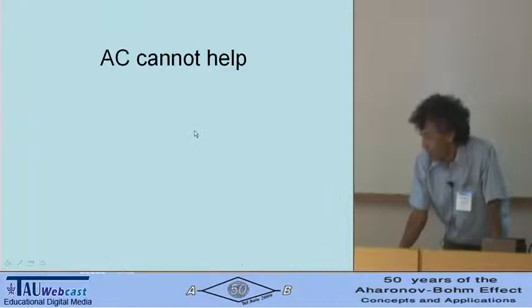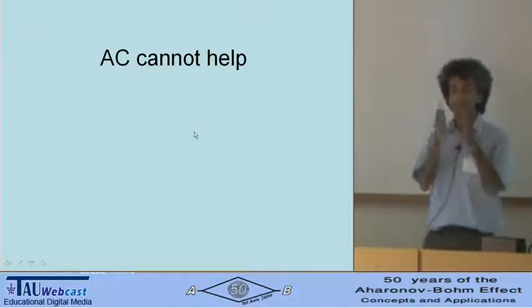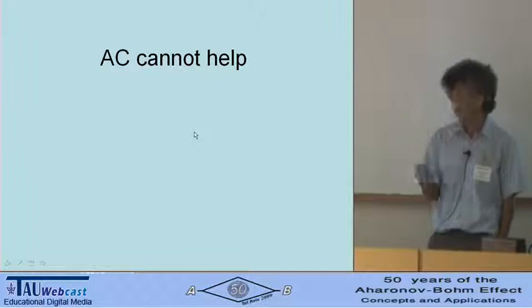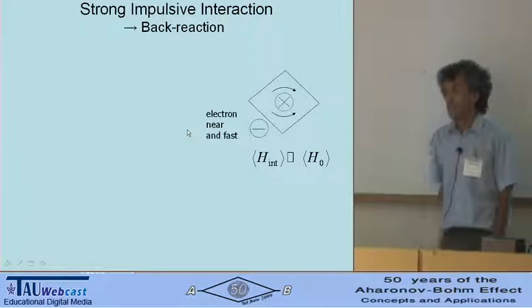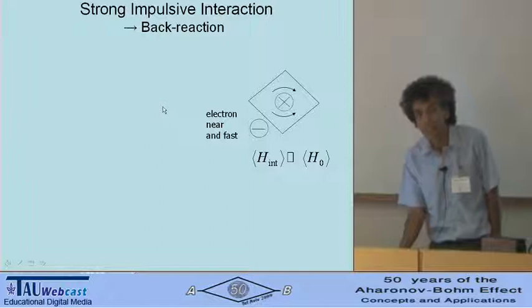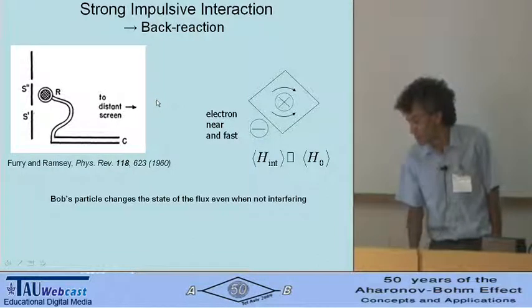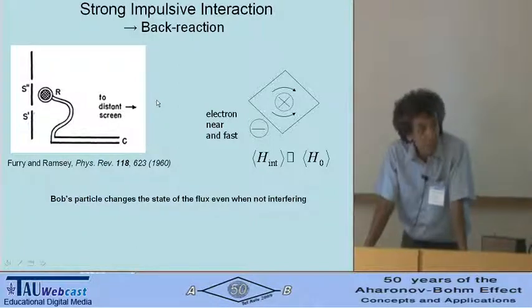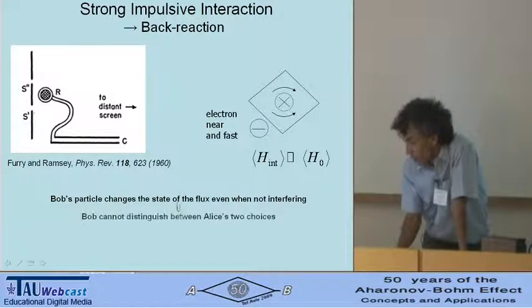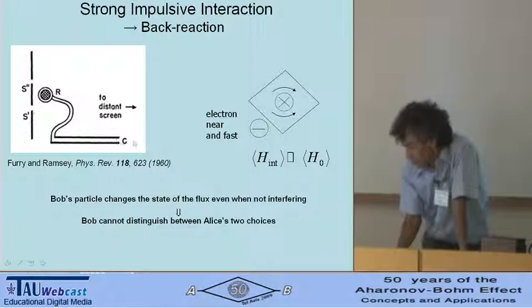What can we do now? AC will not help us, because the superposition now is not between two solenoids that give rise to interference, but it's the same solenoid within which the current may go, either clockwise or anti-clockwise. Let's first dispense with the easy case. Suppose that the electron goes near and fast, such that it can be felt. Then there is this result that shows that what we will have here will be some back reaction, such that Bob's particle will change the flux, the state of the flux, even when it is not interfering, just by going near it. And in this case, Bob cannot distinguish between the two choices of Alice and no paradox ensues.